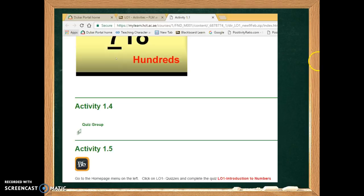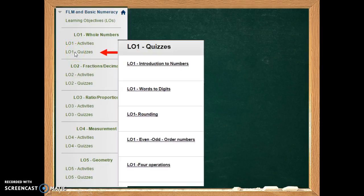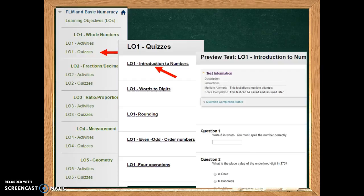To return to the quizzes, you can click on the LO1 Activities tab at the top of the page. And then you are taken to the main menu. Now click on LO1 Quizzes and select the quiz you wish to complete, which in this case is Introduction to Numbers. The quiz opens and you complete it. Press Submit when you are finished.